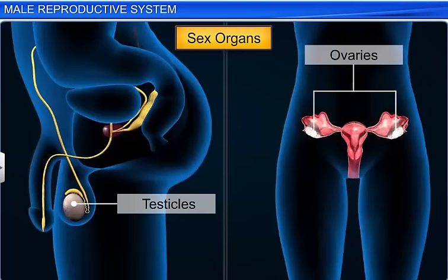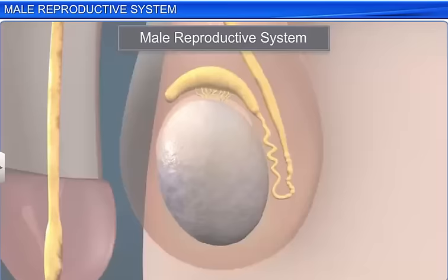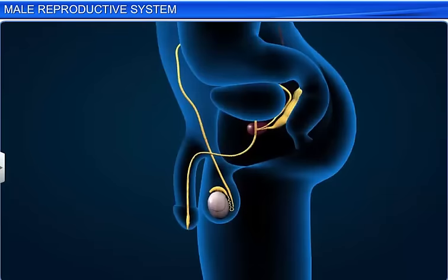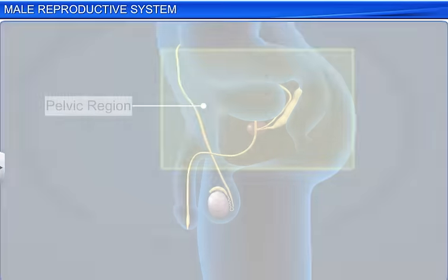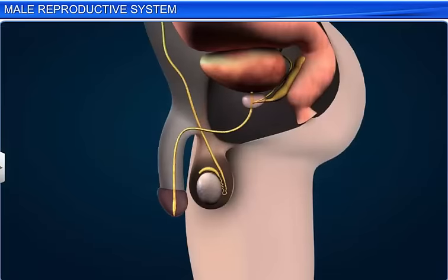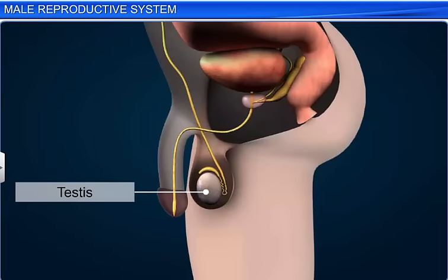Let us learn about the organs of the male reproductive system. The male reproductive system is located in the pelvic region. It includes the testes, accessory ducts, accessory glands, and external genitalia.